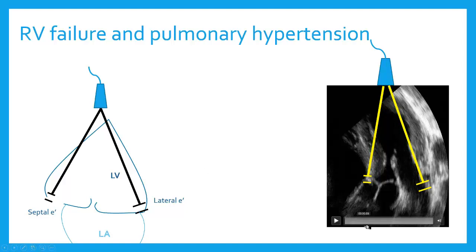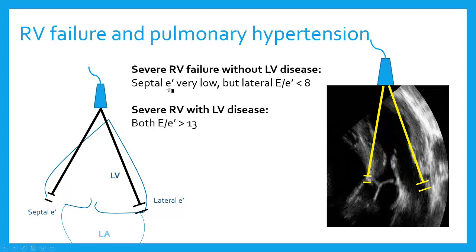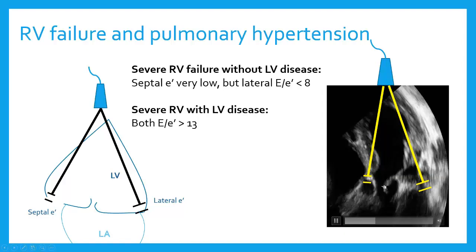I also deal with a lot of patients with RV failure, sometimes out of proportion to their left ventricular failure. How do I figure out what's going on with my RV failure? We can actually look at diastolic function and determine to some degree whether or not the RV failure is due to left ventricular disease or is due to just pulmonary hypertension. If I have a very low E-prime velocity, I need to look at both septal E-prime velocity and lateral E-prime velocity in patients with RV failure. If I have somebody with a septal E-prime velocity that's very low but my lateral E to E-prime is normal, that tells me the RV failure is not really due to left atrial hypertension.